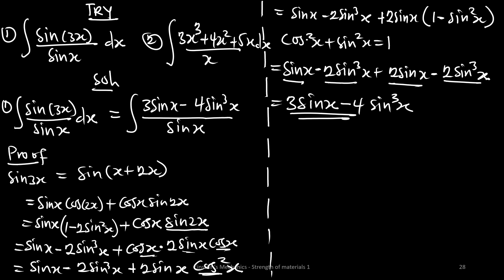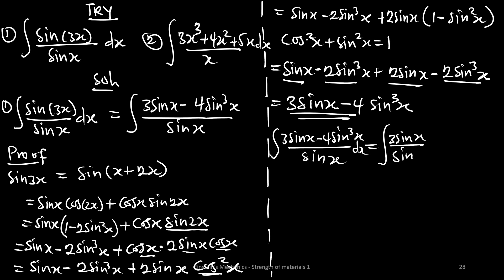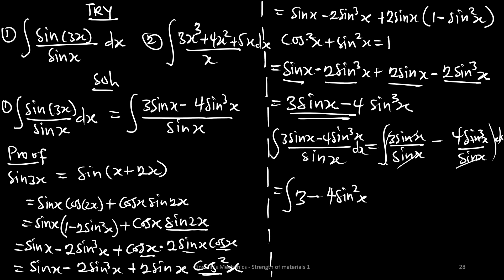Now we can substitute into the integral: the integral of (3sin(x) minus 4sin³(x)) over sin(x) dx. Splitting the fraction gives 3sin(x)/sin(x) minus 4sin³(x)/sin(x). We can cancel sin(x), leaving us with 3 minus 4sin²(x) dx.